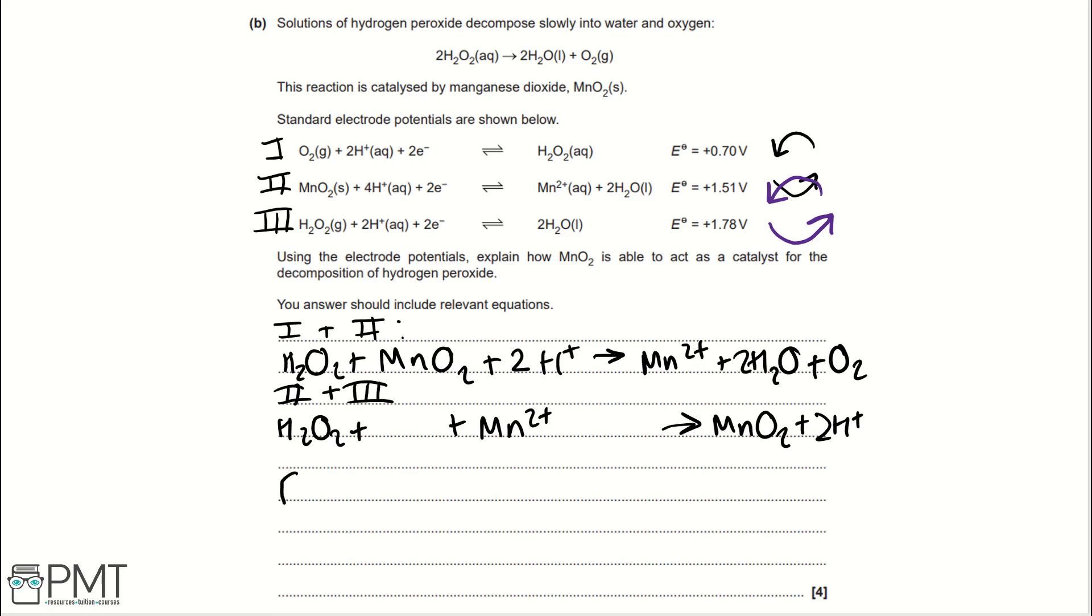Now, a bit of reasoning, we would write that the electropotential for I is more negative than 2, so shifts left. And that's enough reasoning. And then, to answer the rest of the question, how MnO2 acts as a catalyst, well, we can say that MnO2 is regenerated. And that is enough to get our 4 marks for this question. You get a mark for each of your equations, a mark for referring to electrode potentials and how they shift, and then a mark for saying that MnO2 is regenerated, which means that it's able to act as a catalyst.